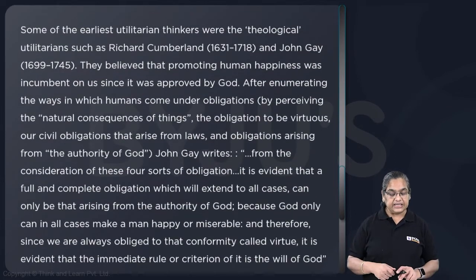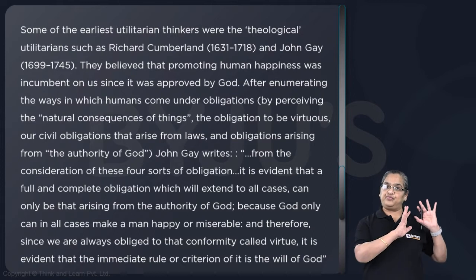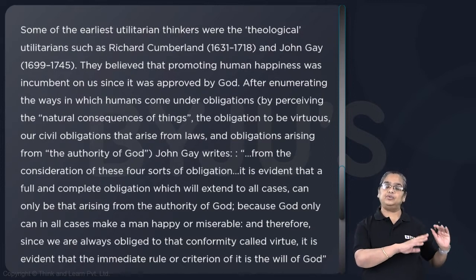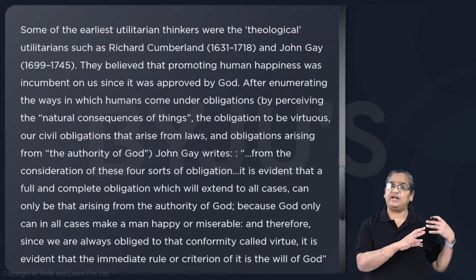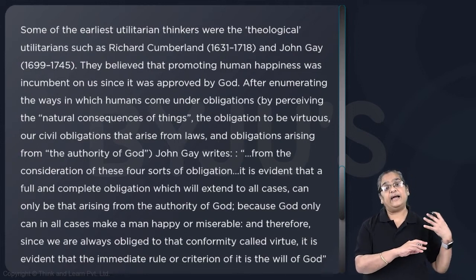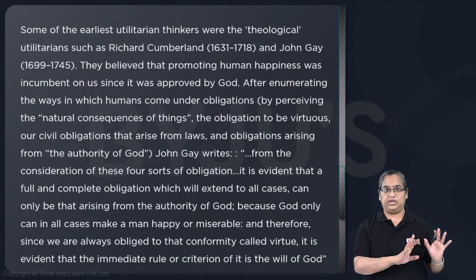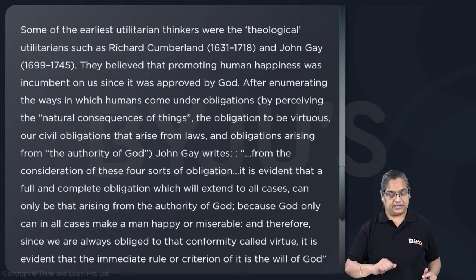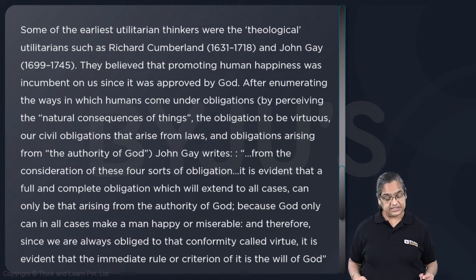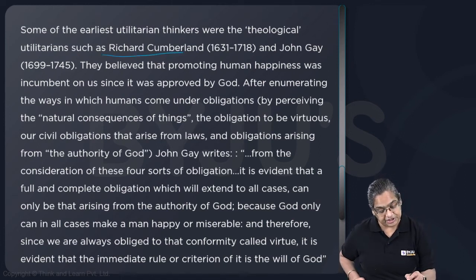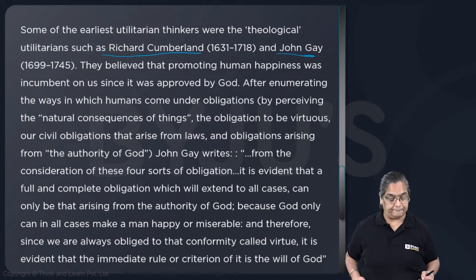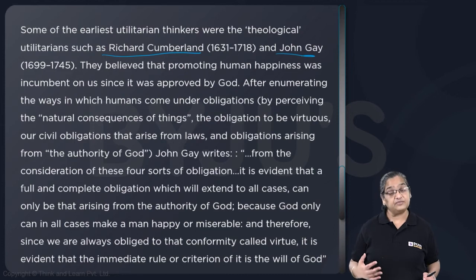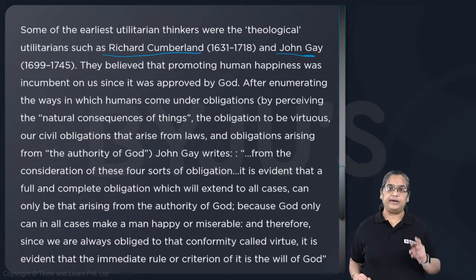Some of the earliest utilitarian thinkers were the theological utilitarians, such as Richard Cumberland and John Gray. They believed that promoting human happiness was incumbent on us since it was approved by God. After enumerating the various obligations humans come under — the obligation to be virtuous, civil obligations, and obligations arising from the authority of God — the passage quotes John Gay.